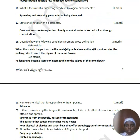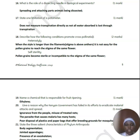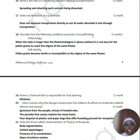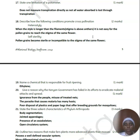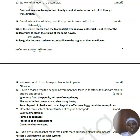Dissecting needles in biological experiments are used for spreading and attaching parts of animals being dissected. One limitation of a potometer is that it does not measure transpiration directly — it measures the rate of water absorption, and you assume that the amount of water absorbed is the same as the amount of water lost through transpiration.